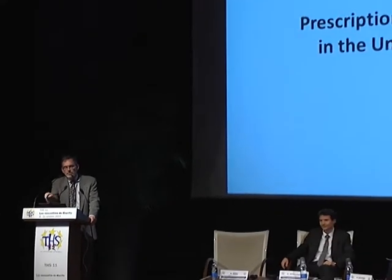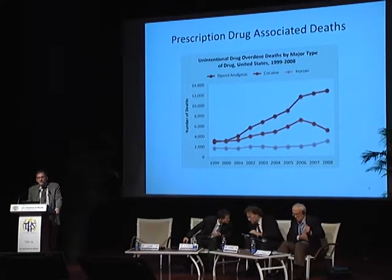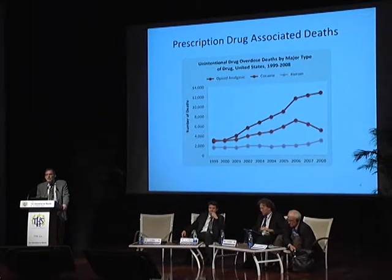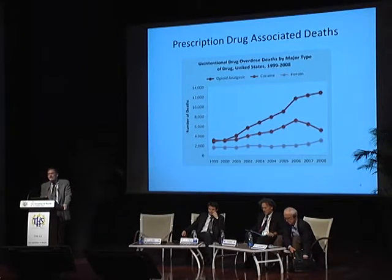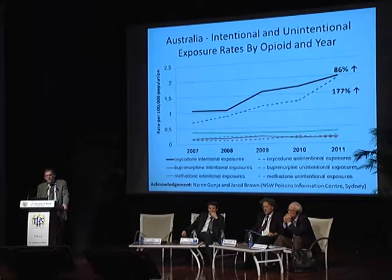I won't go into a lot of background here on the opioid epidemic in the United States. I'll just show a couple slides showing the increase in deaths in the United States — in 2010, 2011 it reached 16,000 deaths per year. I then showed a slide from the United Kingdom, but tonight I'm going to show a slide from Australia, where we've also done some work with the Australian network of poison centers.